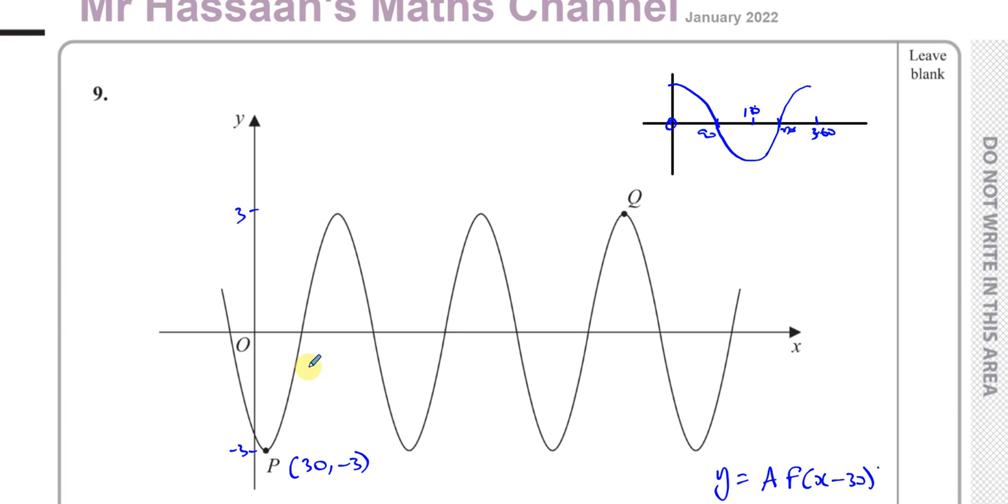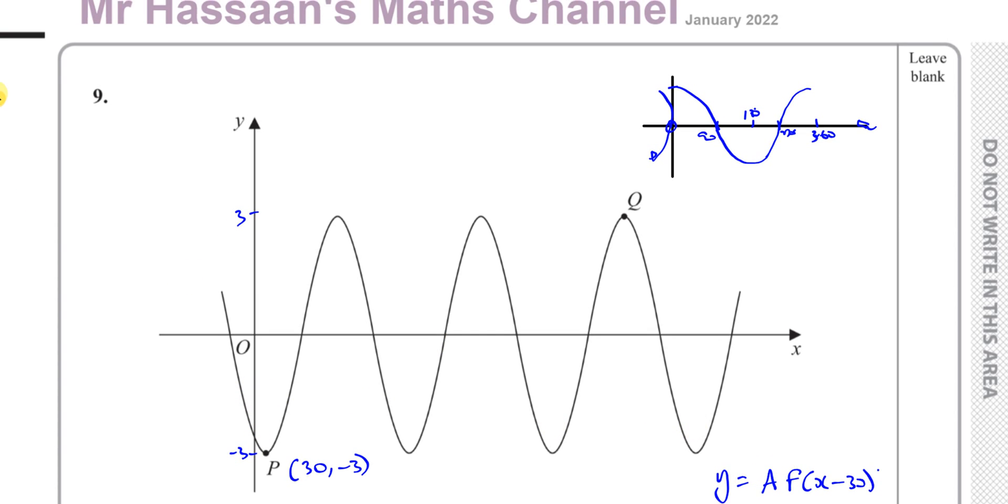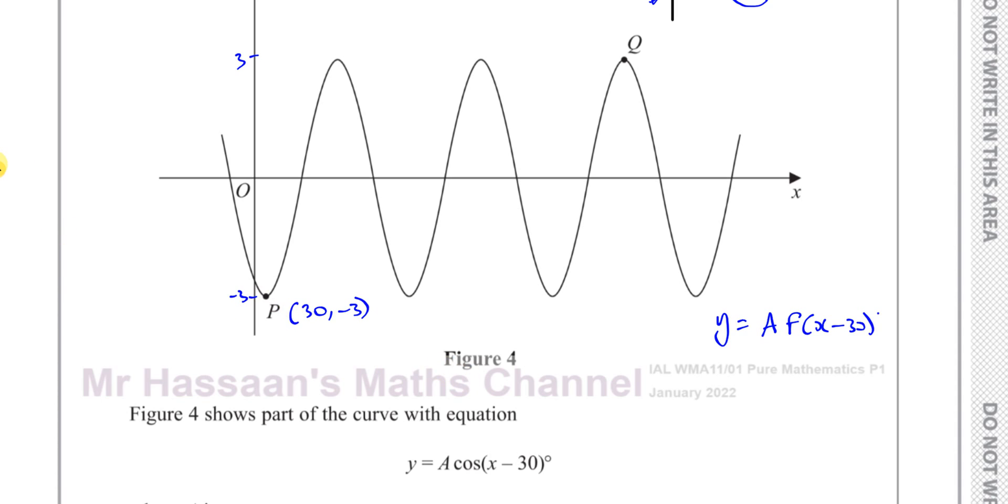So we can see that this curve is, if you think about it, it's like it's been shifted 30 degrees to the right, because that's what this x minus 30 inside has. And also, it's, if you consider this compared to this, it's like it's upside down. So it seems like if it's upside down, that means it's been reflected in the x-axis. And something that's reflected in the x-axis, you multiply the whole function by negative 1.